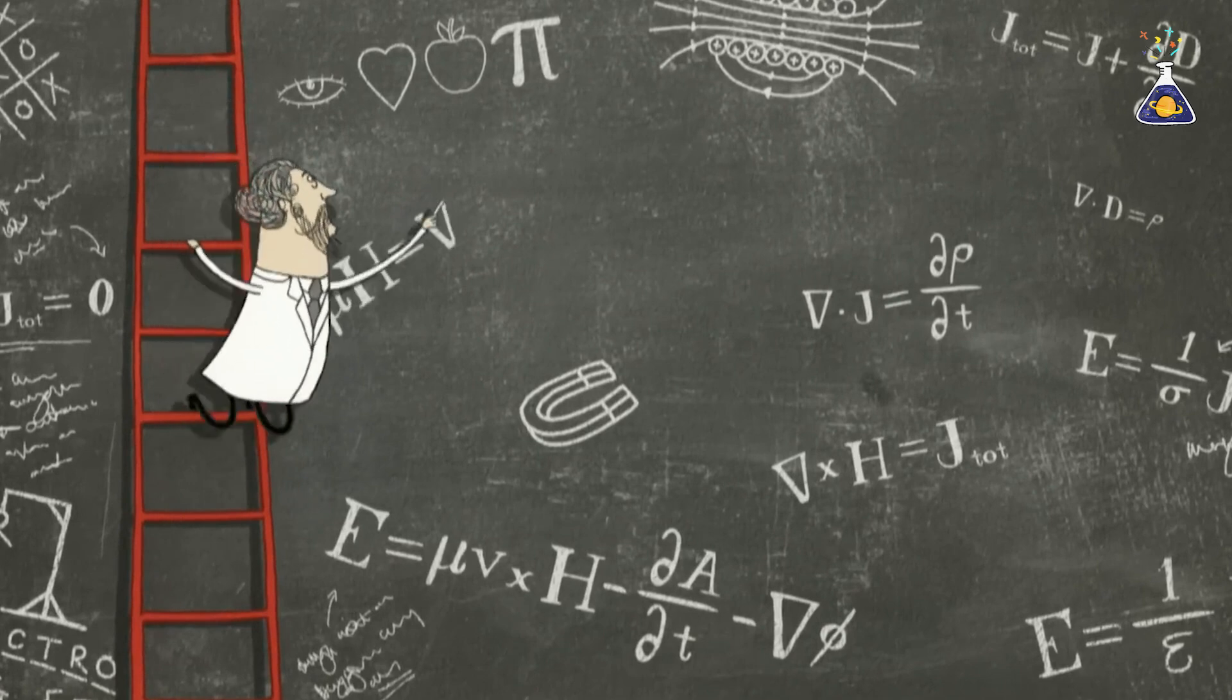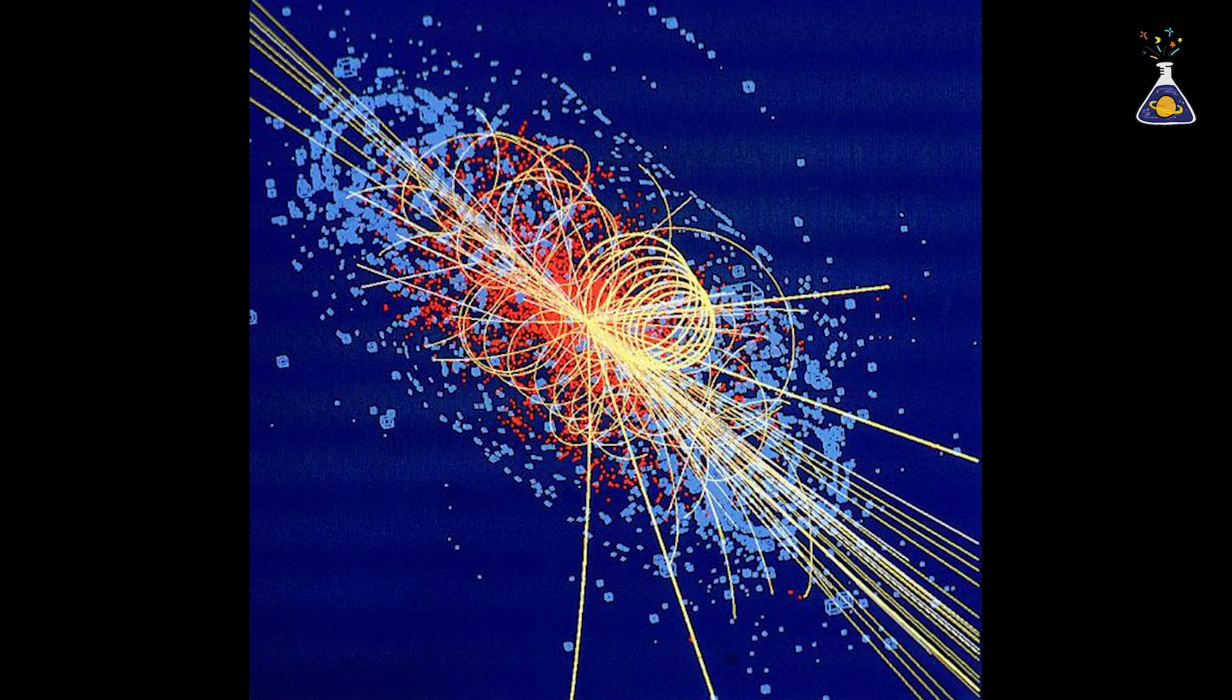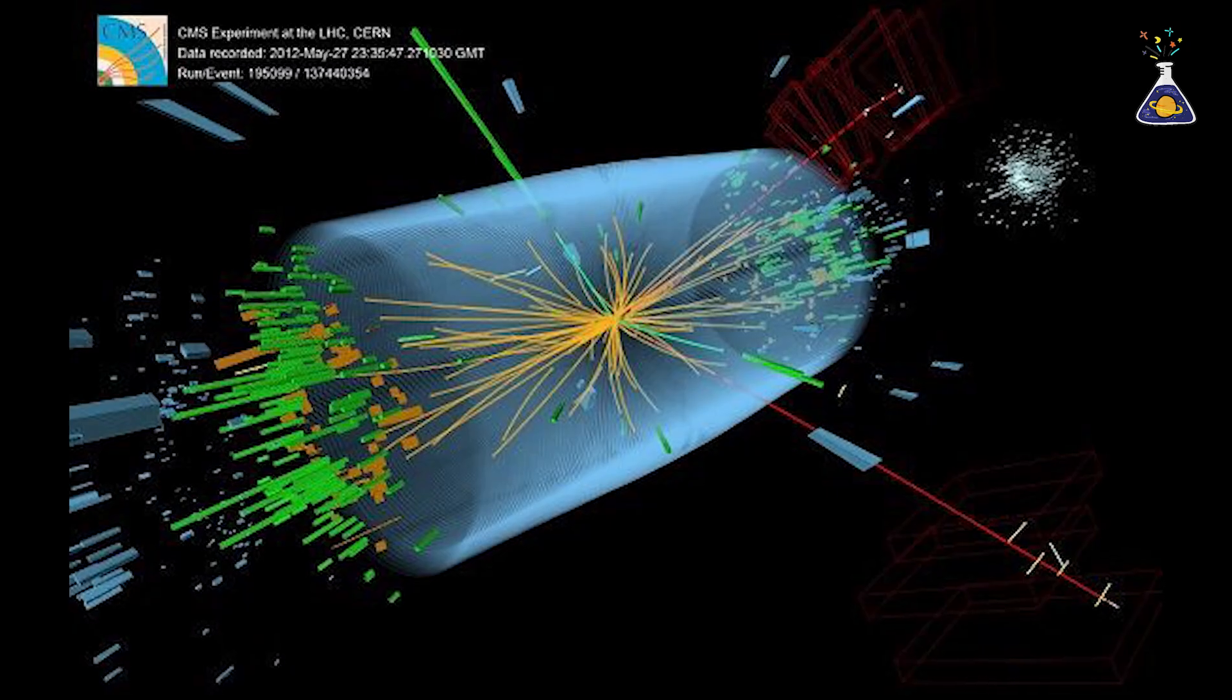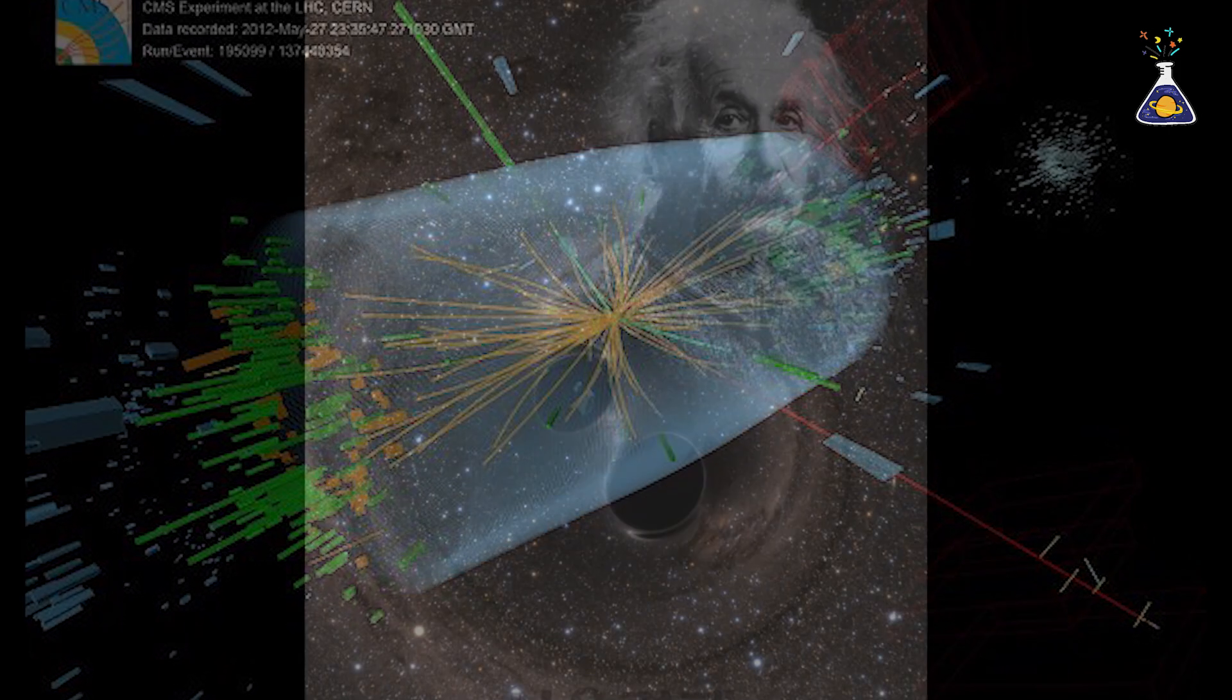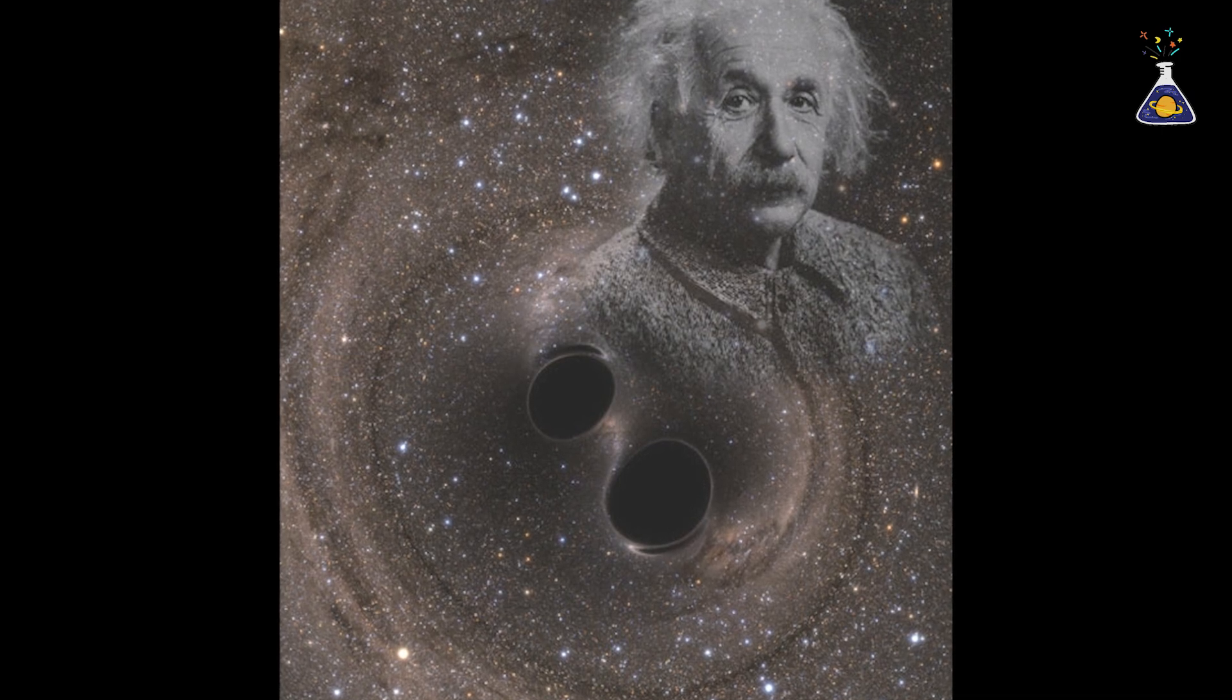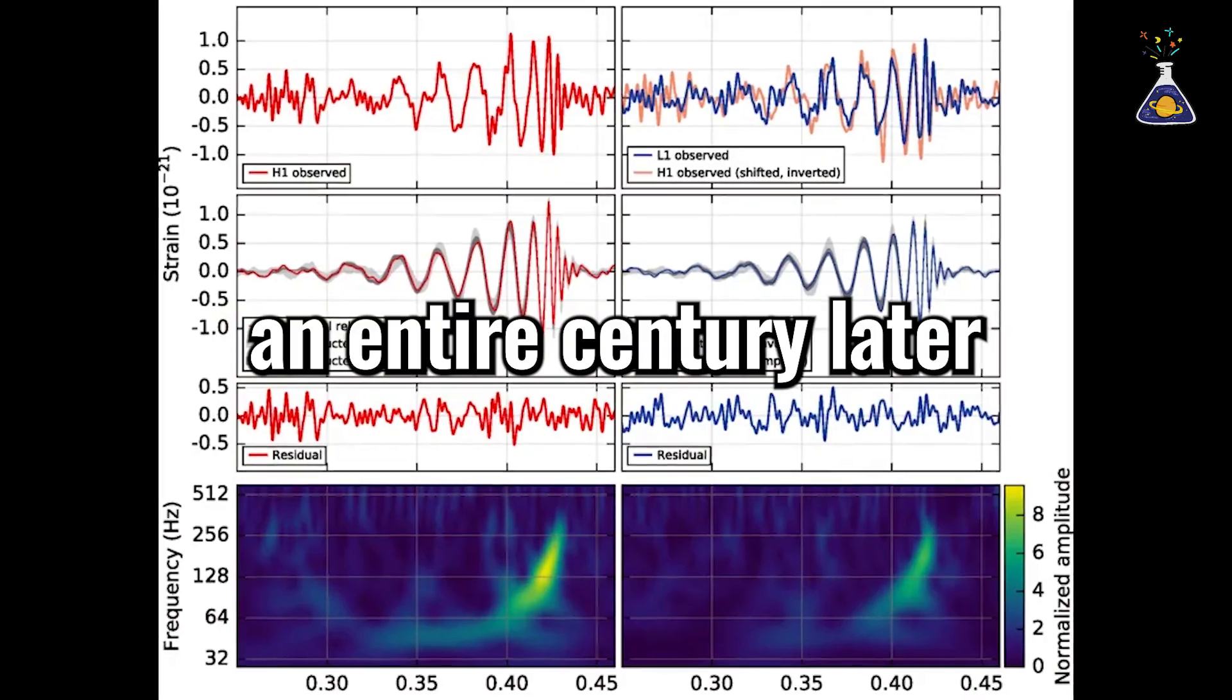The Higgs boson was theoretically predicted in 1964 and finally confirmed in 2013, almost 50 years later. Gravitational waves were predicted by Einstein's theory of general relativity in 1915 and finally observed in 2016, an entire century later.